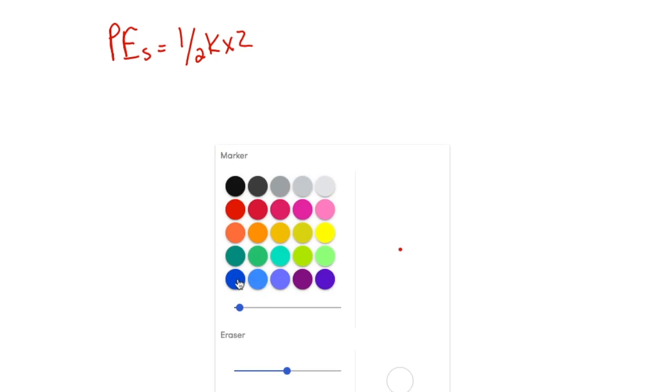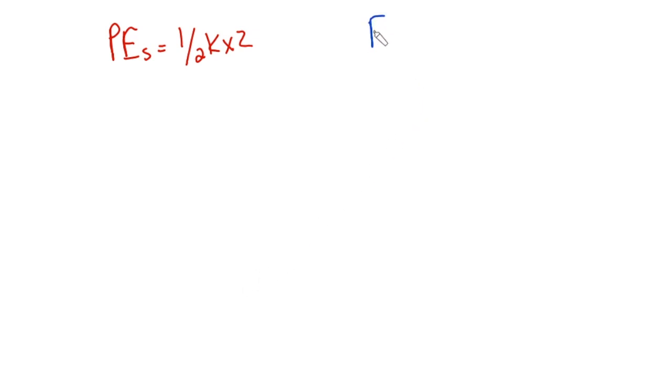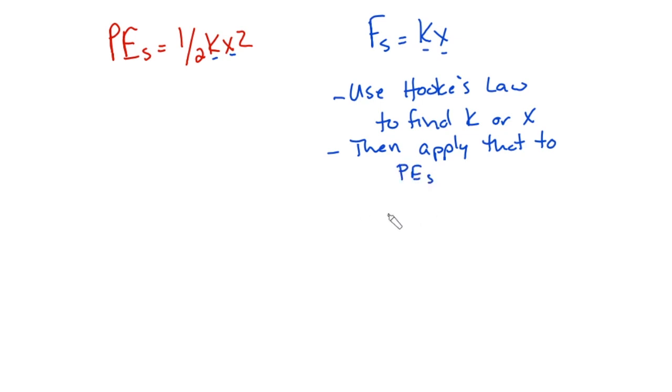How can I use Hooke's Law to solve for this? Well, if I look at two formulas, PEs equals one half Kx squared, and then I look at the other spring formula, which is going to be Fs equals Kx, you see that there are very similar variables here to work with. So when we get a little bit more advanced for solving for PEs, sometimes you're going to have to use this to find K or X and then apply that to the PEs formula.